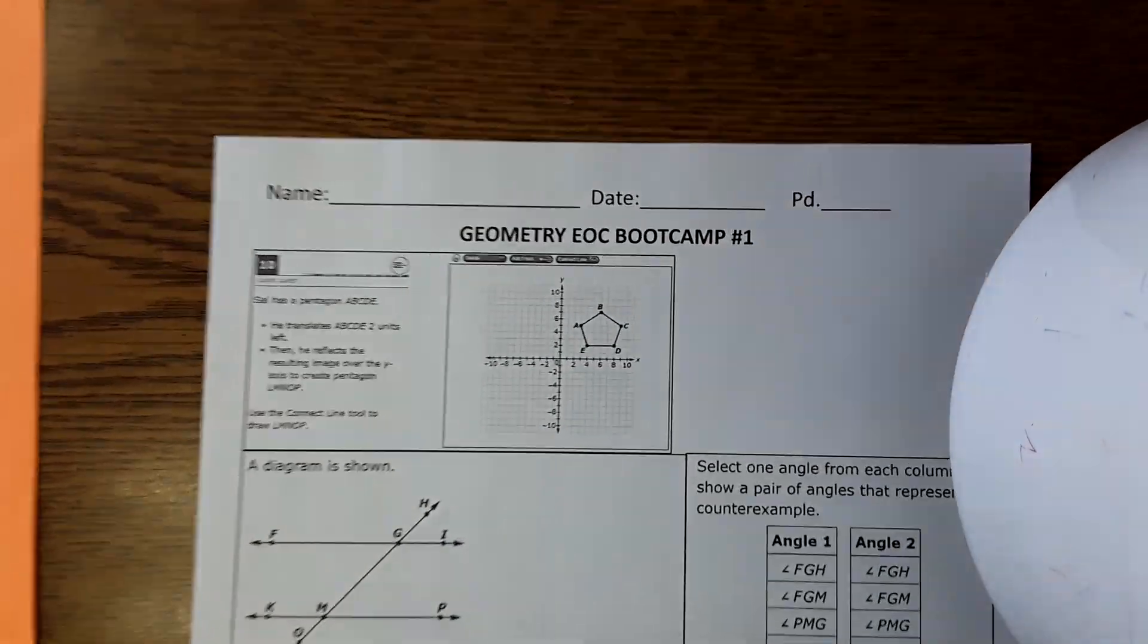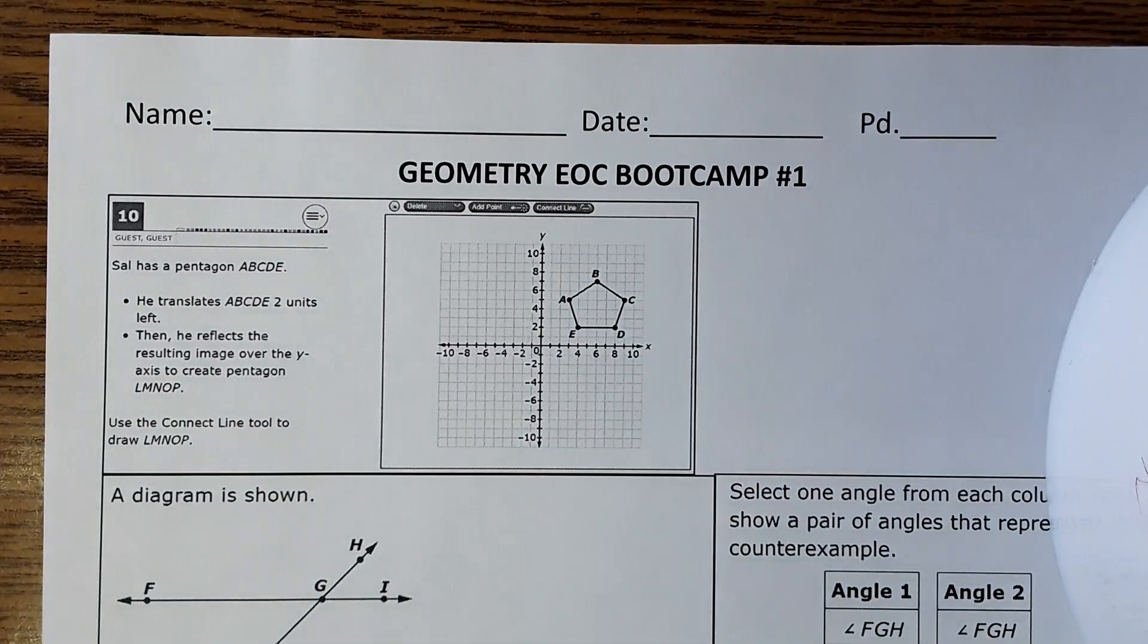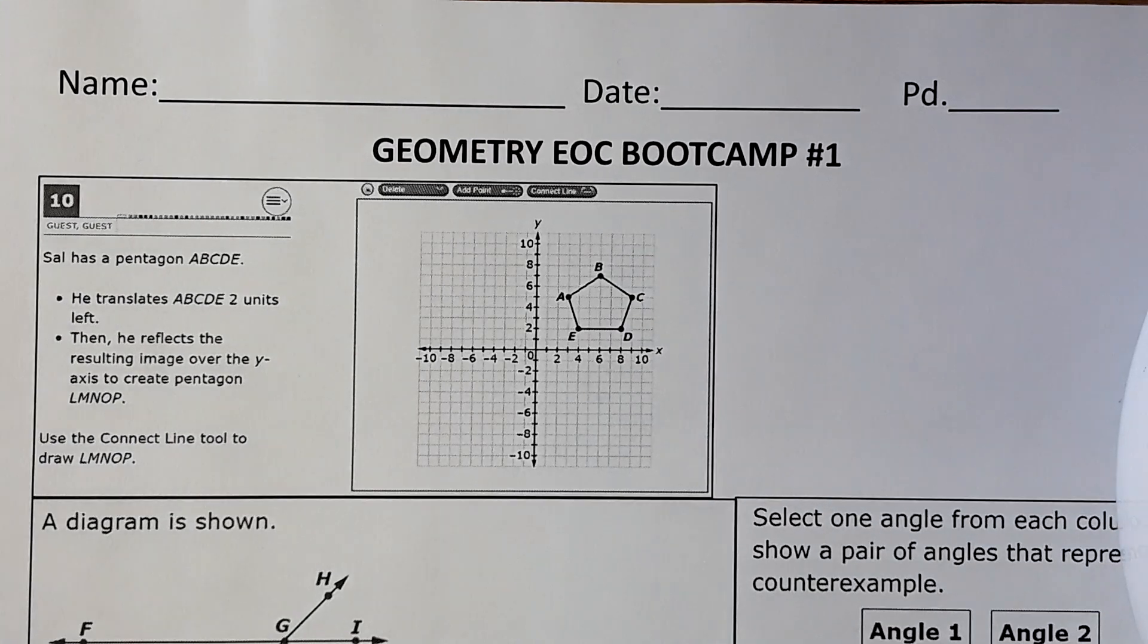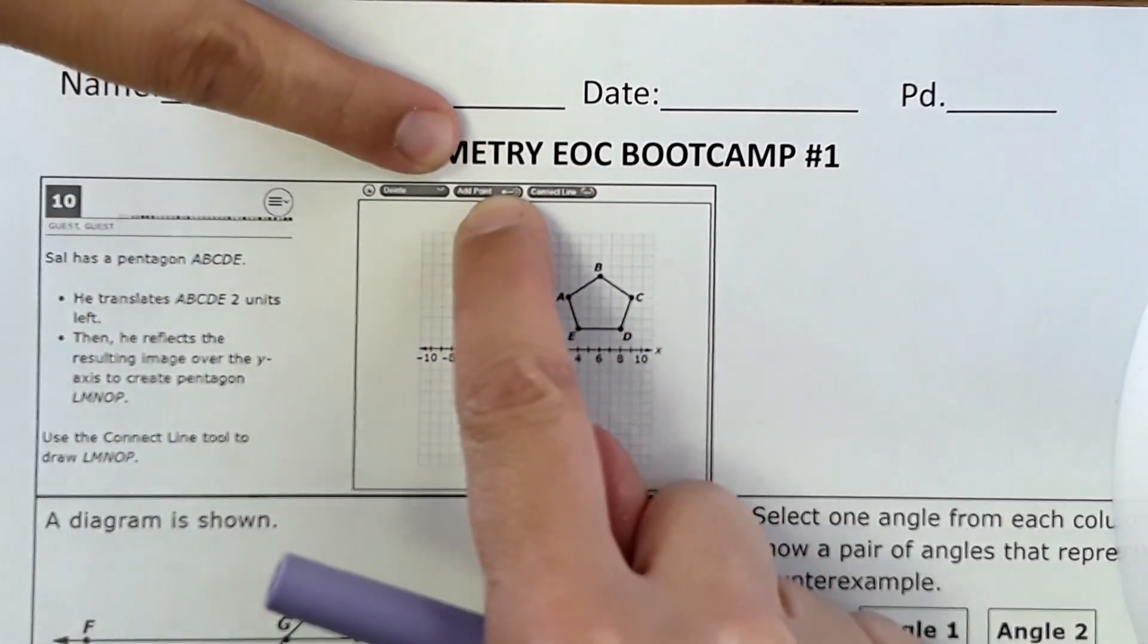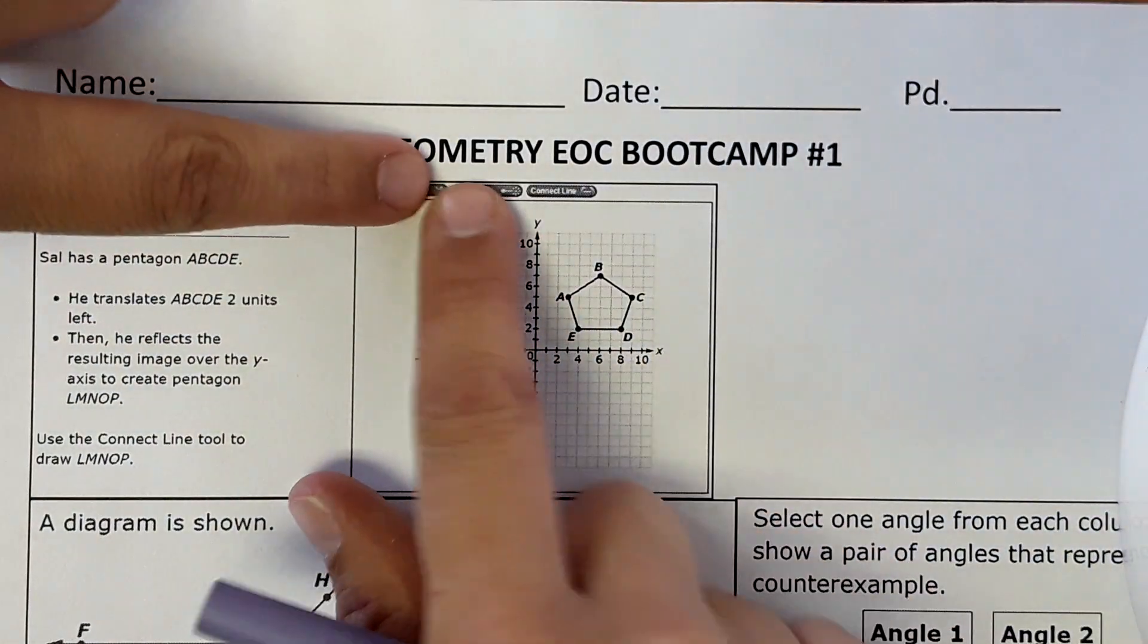The first problem says Sal has a pentagon ABCDE. He translates ABCDE two units to the left and then reflects it over the y-axis. It says use the connect line tool to draw LMNOP, which is the transformation. The connect line tool and add point are up here, so on a computer you would click that to add points.